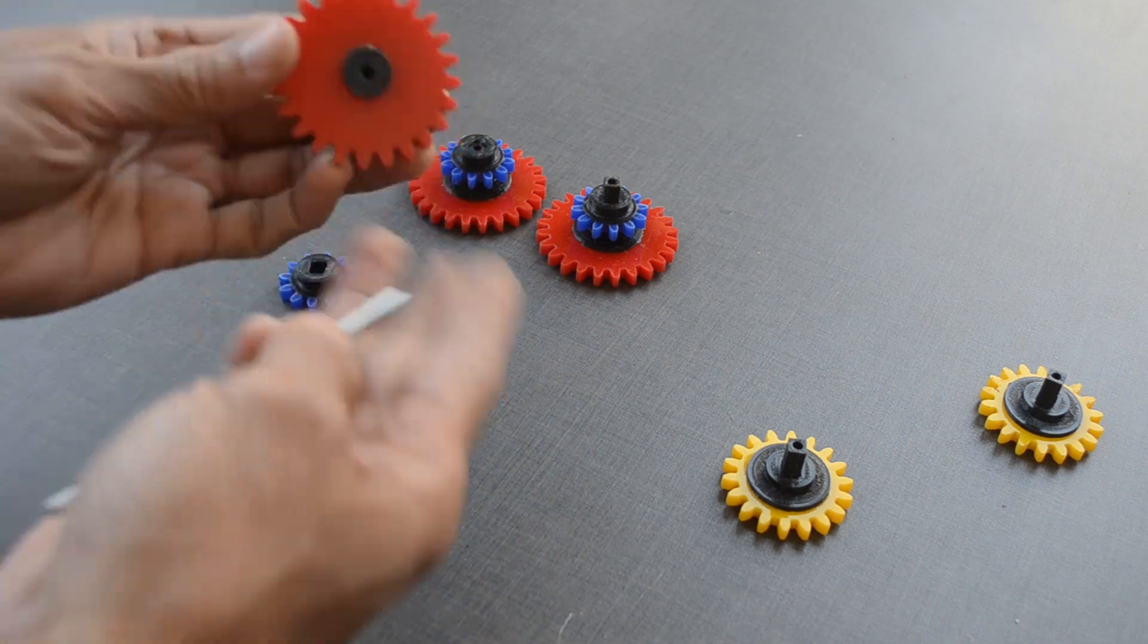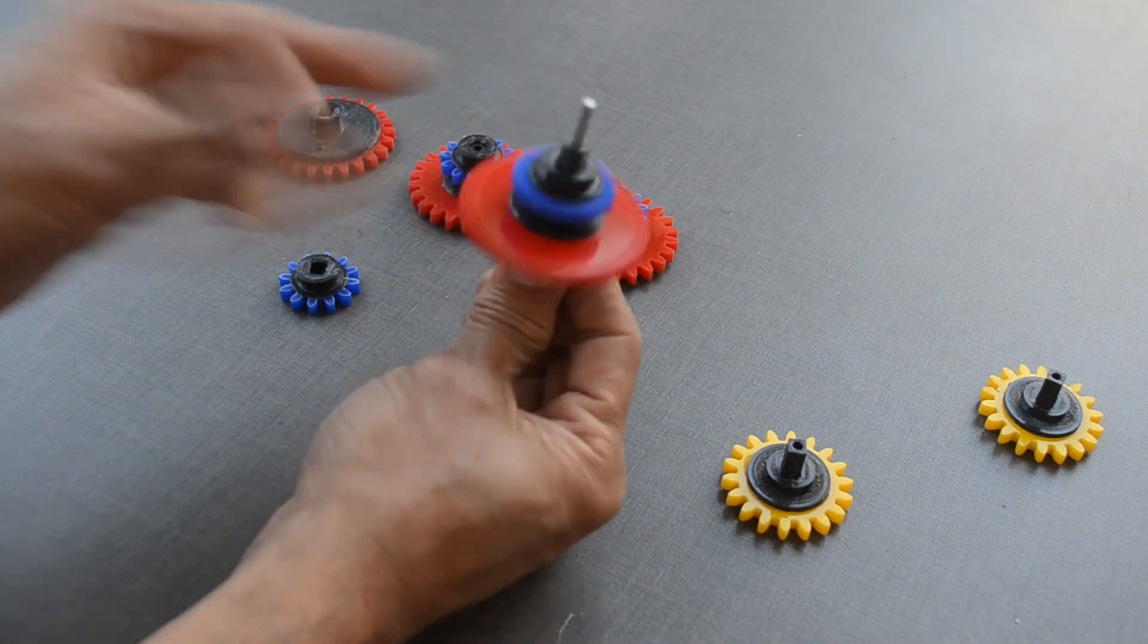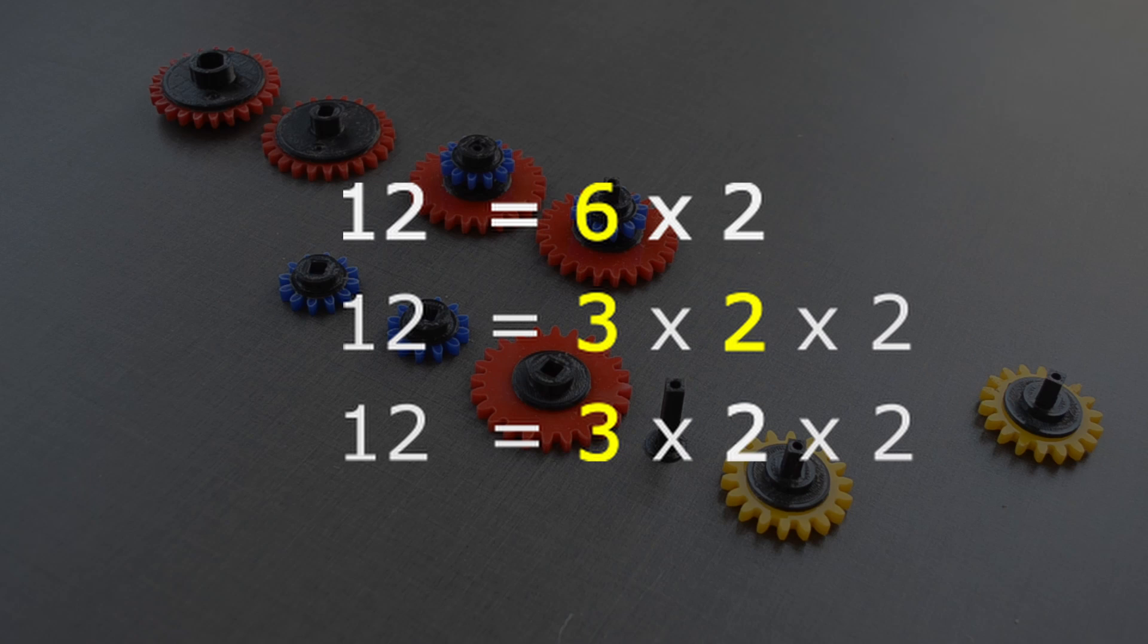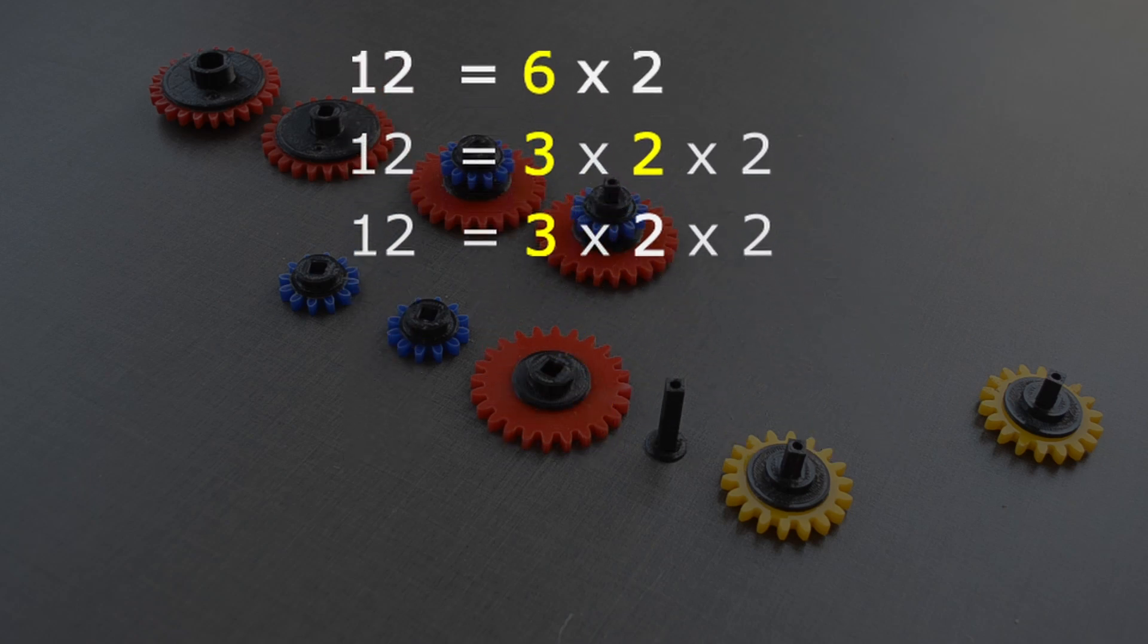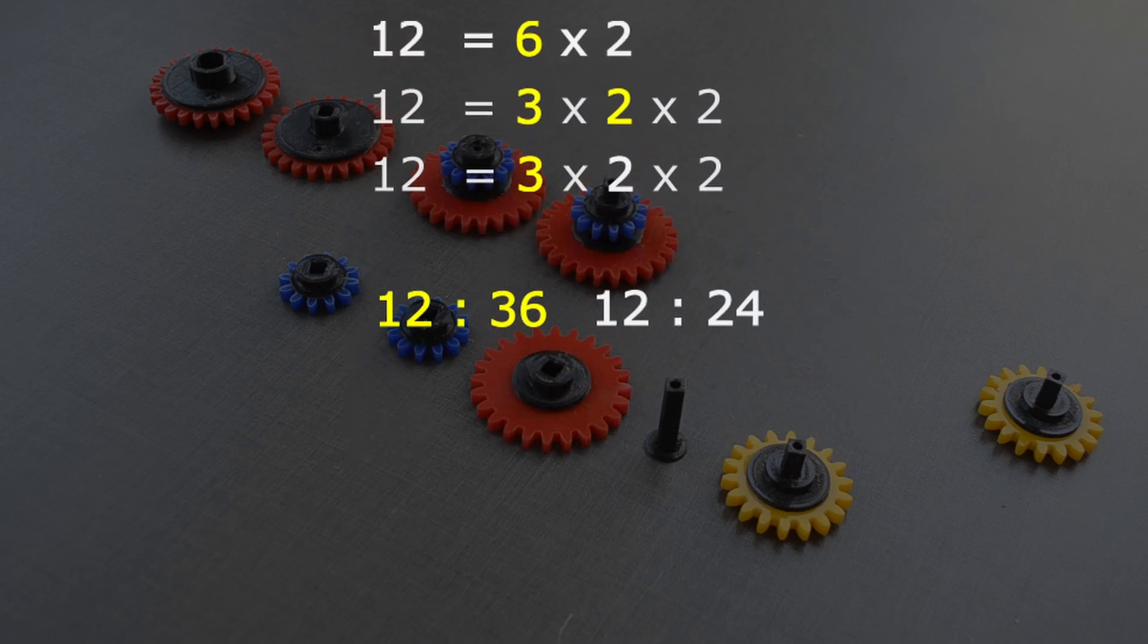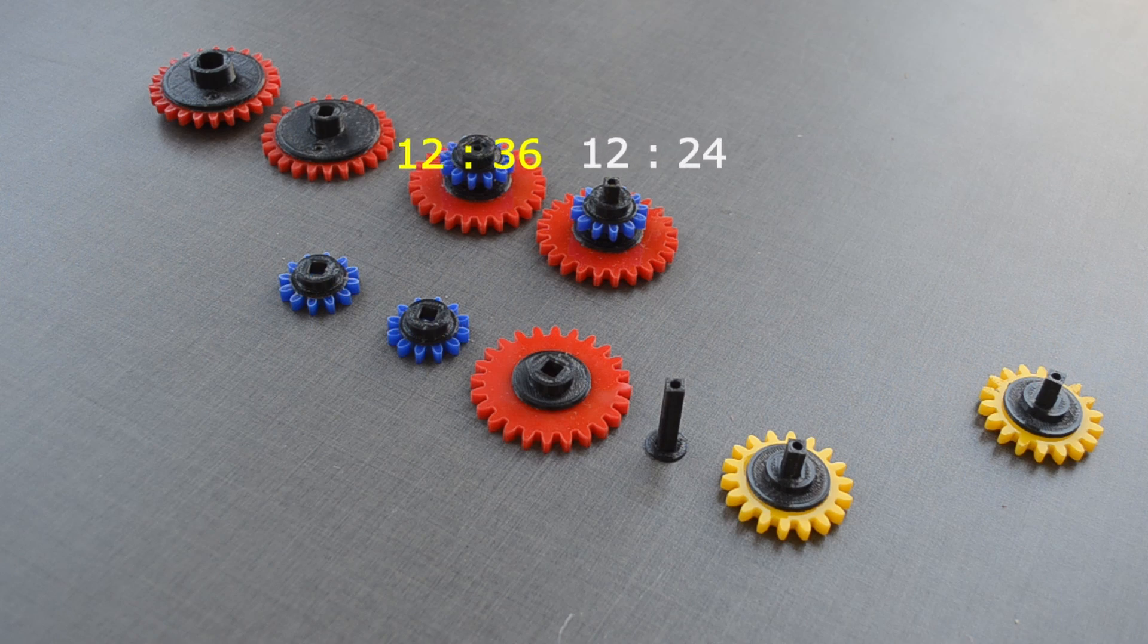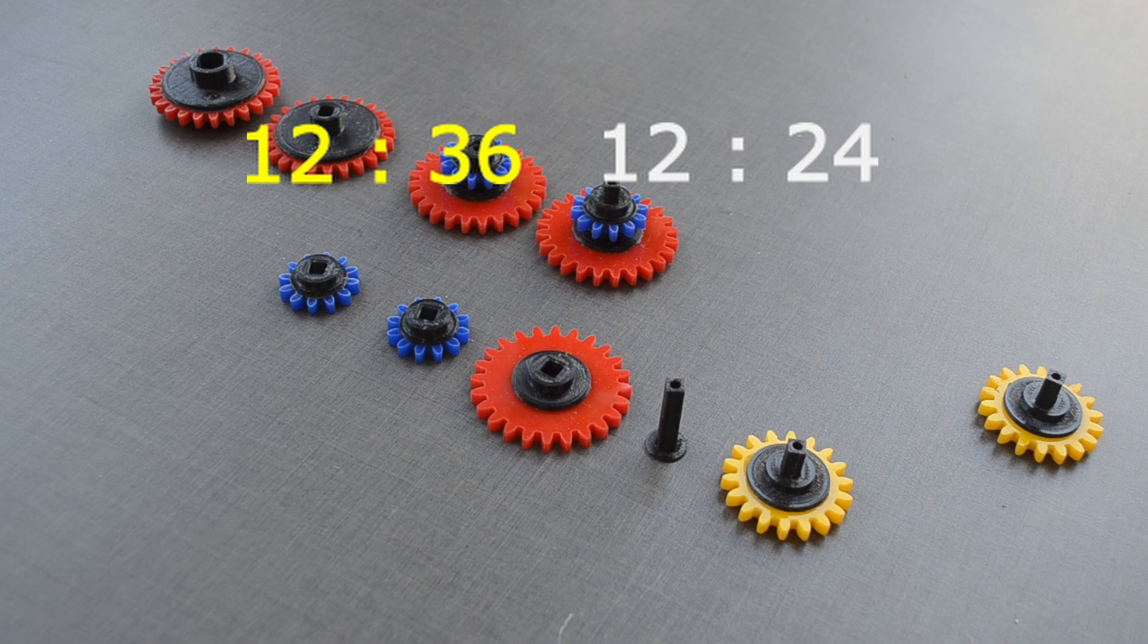Let us factor number 12 so that we can work with smaller ratios. 6 × 2 is 12. Further, we can break it down into 3 × 2 × 2, that is 12. Reduction ratio of 2 can be achieved with the help of two gears, 12 teeth and 24 teeth. But it is not possible to get the reduction ratio of 3 with available gears. We will need 12 teeth and 36 teeth, which we don't have.